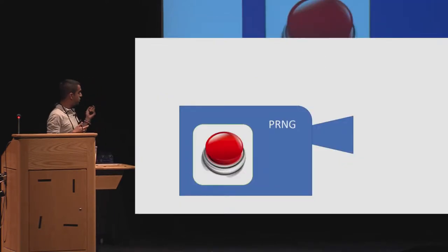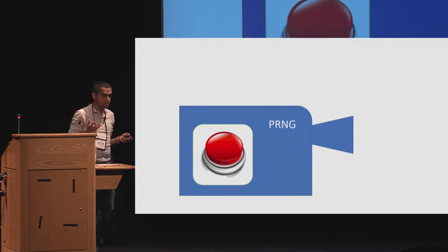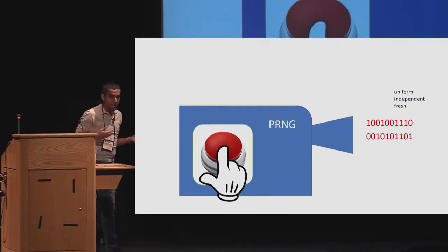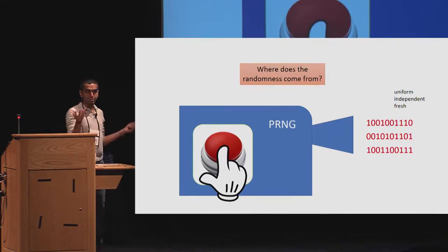We all know PRNG is a big red button, probably from Staples. You press it once, you get an output. You do it again, you get another output, and a third time, another output, and so on. You get the idea.